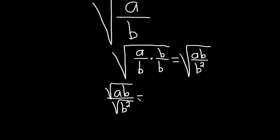And everything here is positive, all the variables. So this will be the square root of a b. And then this will just be b. You take the square root of b squared, you get b, as long as b is positive.